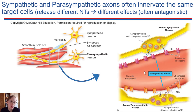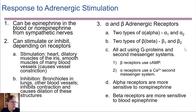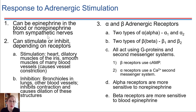Let's take a look at the general responses to adrenergic stimulation. What are some things that would happen here? Adrenergic stimulation can be either from epinephrine present in the bloodstream, or it can be due to norepinephrine coming from the sympathetic nerves.